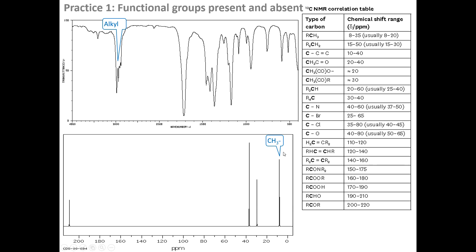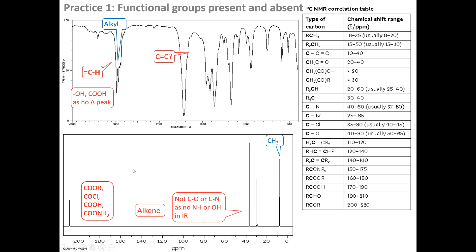You've got an alkyl group because it's present in both the IR and the NMR. We've got some upfield peaks, and the most upfield peak is always the methyl. We don't have an alkene because it's missing in the NMR, and there's no sharp narrow peak around 3,100 cm⁻¹. We're also missing all the carbonyl peaks for the ester, acyl chloride, carboxylic acid, and amide.